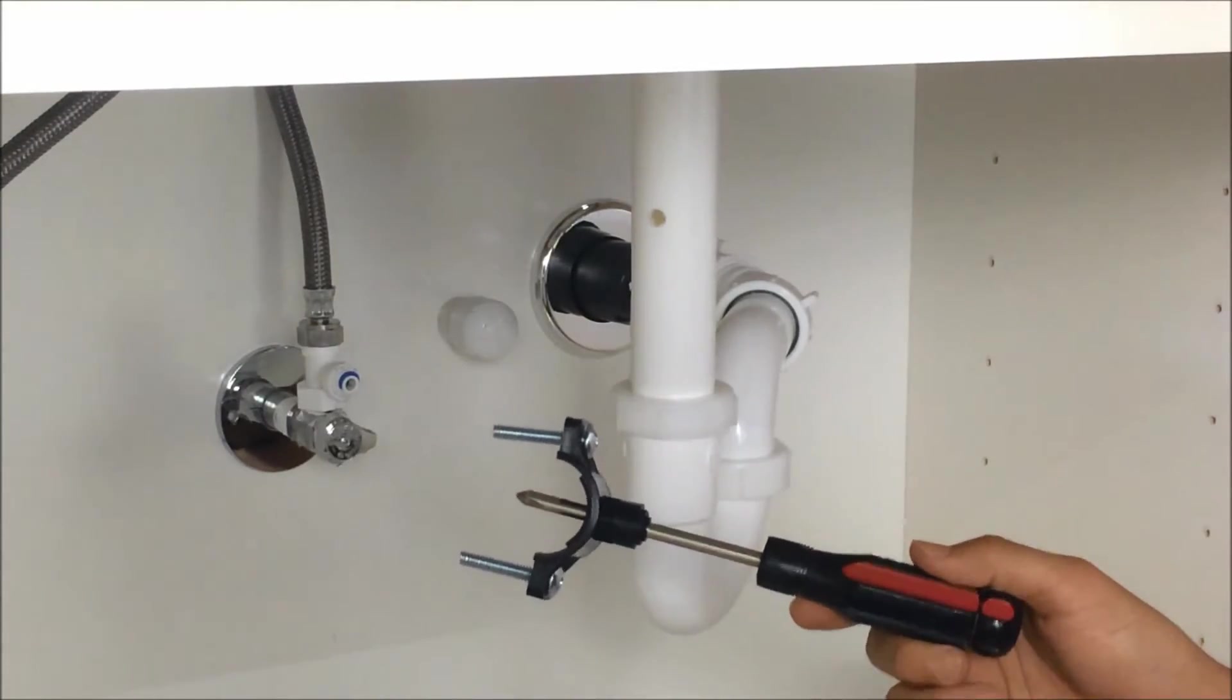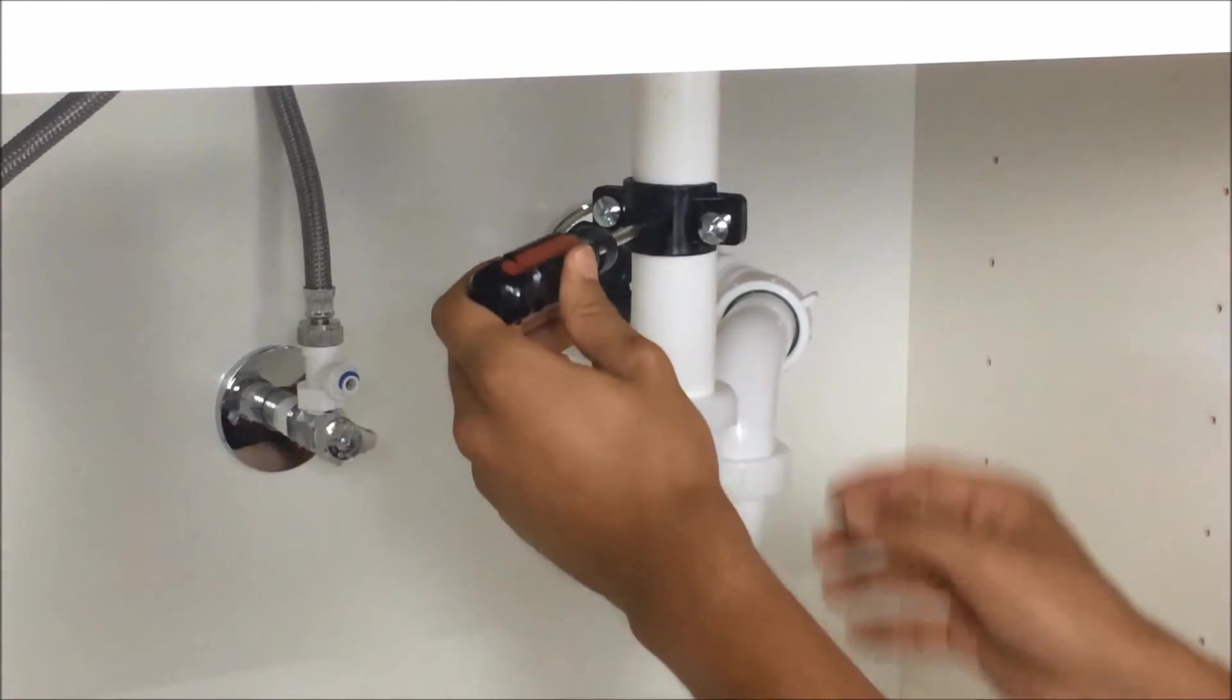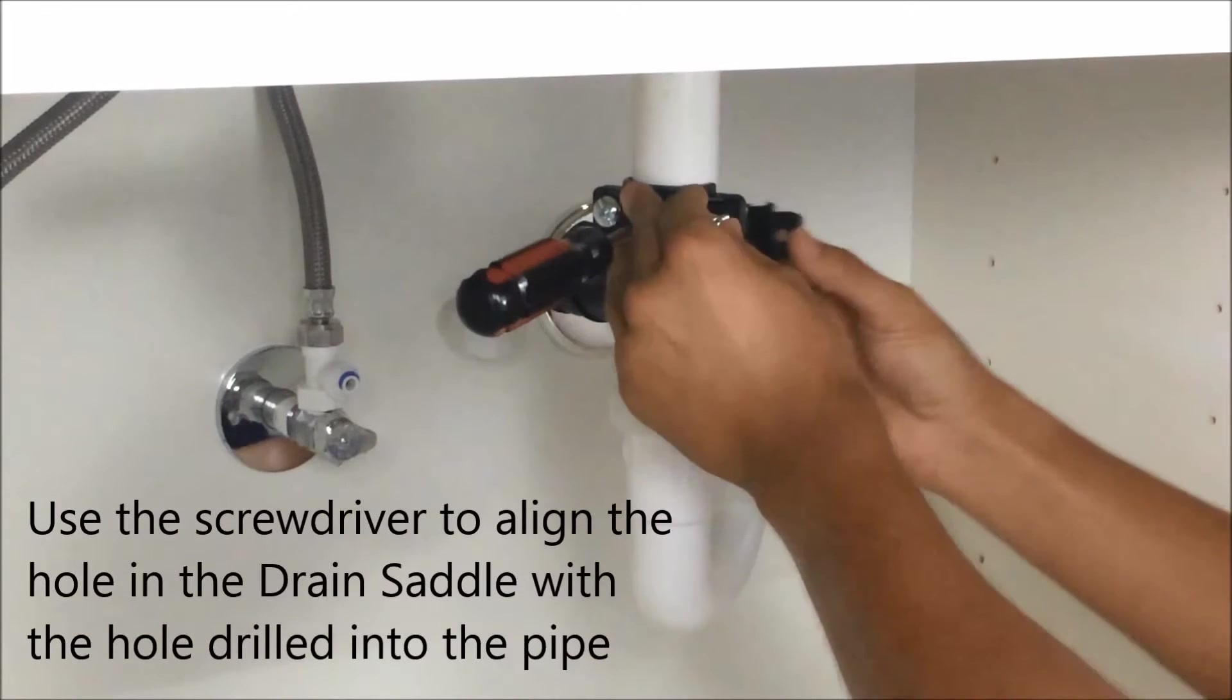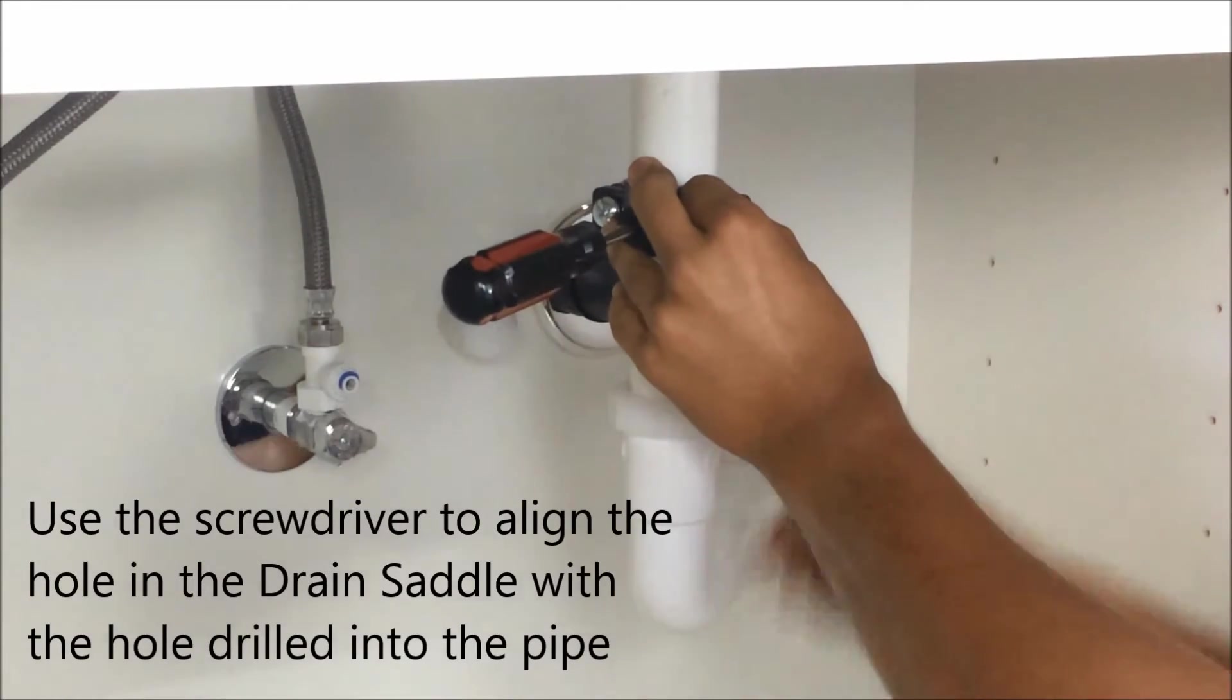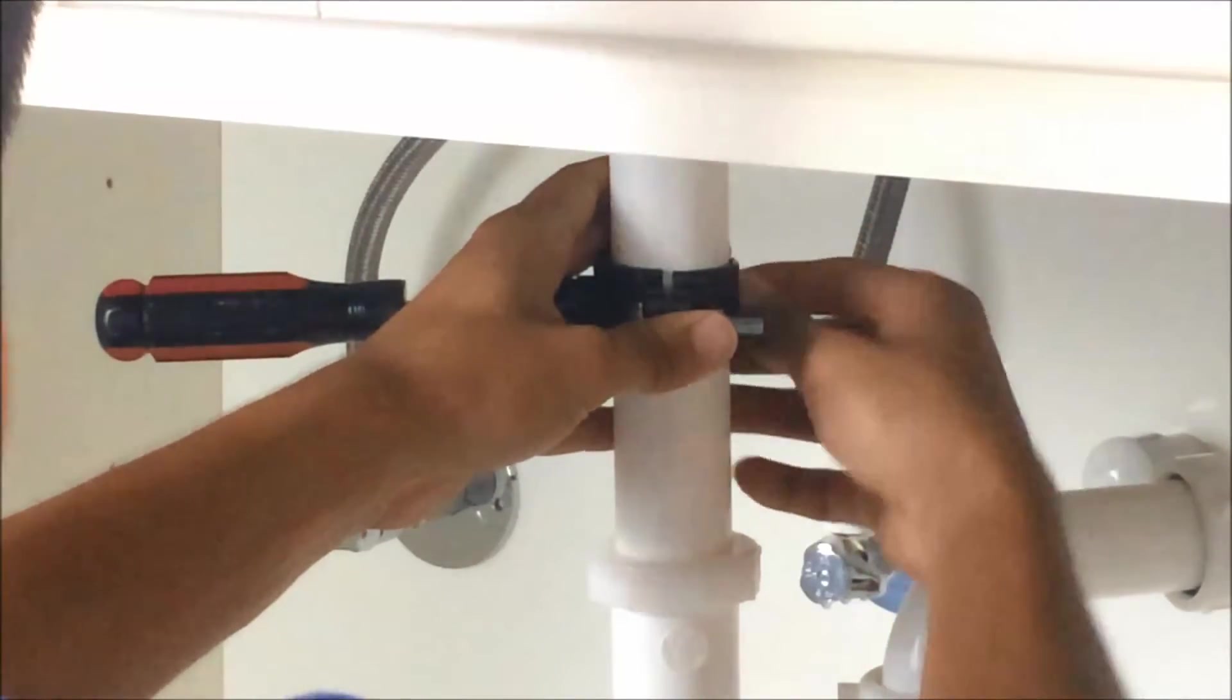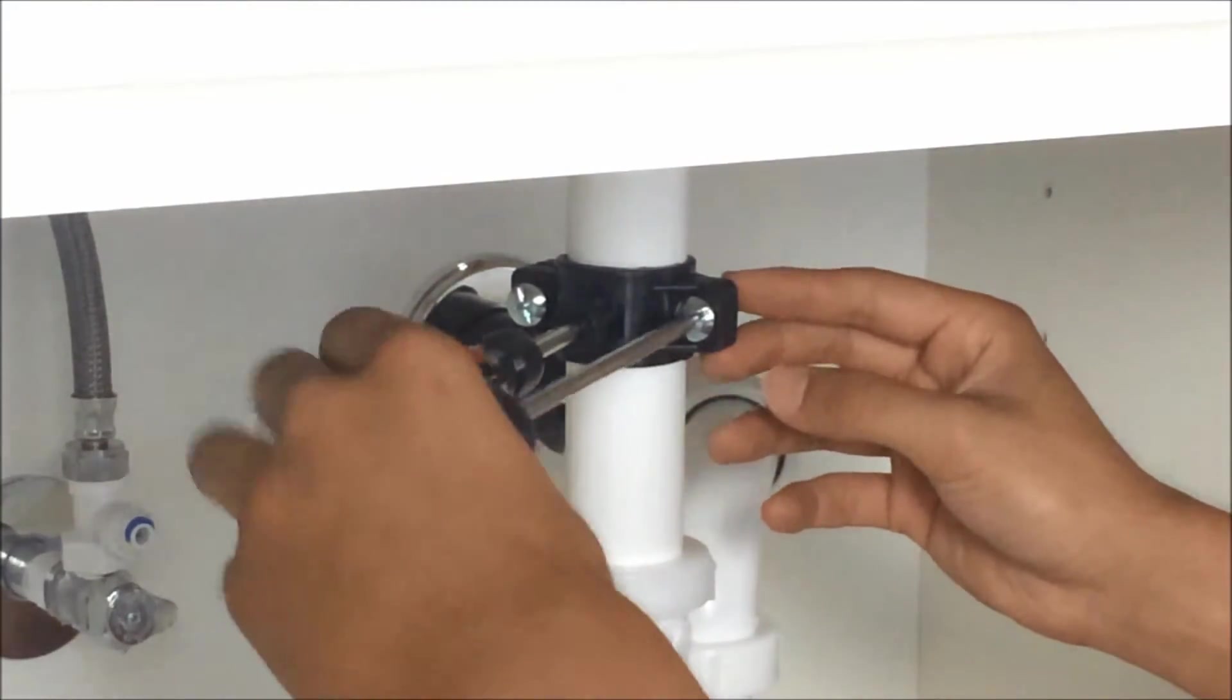I've got a screwdriver going in through my drain saddle. So now I'll take that, go into the drain, take this back piece, and then tighten that down with these bolts. You'll want to leave the screwdriver in place until you've got the drain saddle completely tightened.